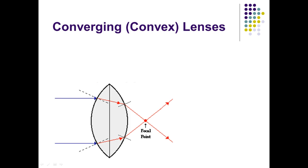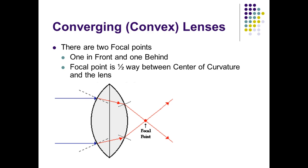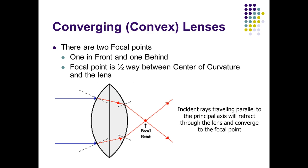We'll be dealing with two types of lenses. The first is a converging or convex lens. There are two focal points — one in front and one behind. The focal point is halfway between the center of curvature and the lens. If you continued the rounded edge of that lens, it would create a circle, and the center of that circle is called the center of curvature — exactly twice the distance of the focal point. With a convex converging lens, parallel light rays will come in, refract, and bend toward the focal point.